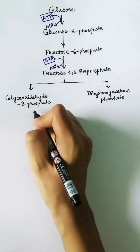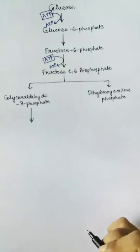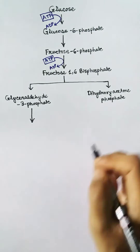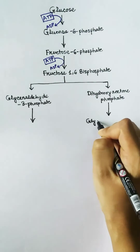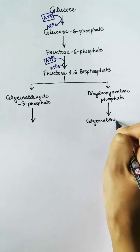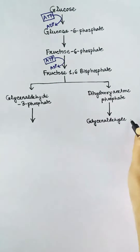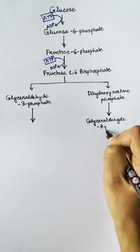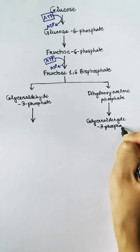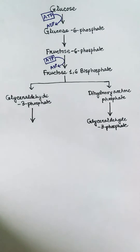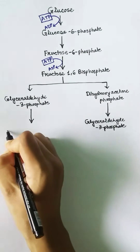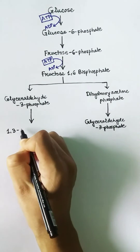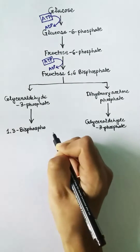Eventually, the dihydroxyacetone phosphate is converted to glyceraldehyde-3-phosphate. These two molecules of glyceraldehyde-3-phosphate then go further in the glycolysis process.